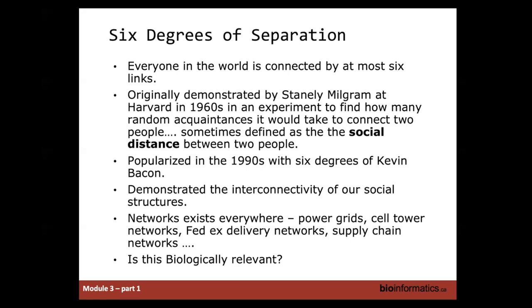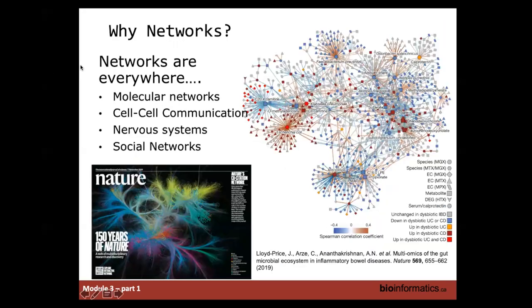That is only one example of networks within society. How is this relevant to biology? In actuality, we can also apply networks to the biological framework. There are many different networks within biology — networks within our nervous system, networks within cells for cell-cell communication, and molecular networks such as protein-protein interaction networks or gene-gene interaction networks. Pathways are also a type of network, so there are many different network types we can represent within biology.